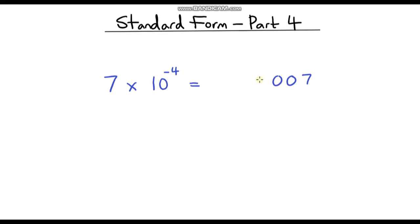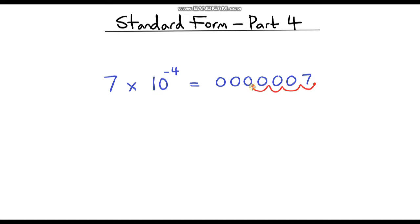So I'm going to write some zeros here. Now we can think about where our decimal point is going to be. We know that our decimal point is starting at 7, so it's going to be after the 7, and now we're going to be dividing by 10 four times, so all I'm going to do is move my decimal place to the left four times: 1, 2, 3, 4. So now my decimal point is here, and our answer is 0.0007.